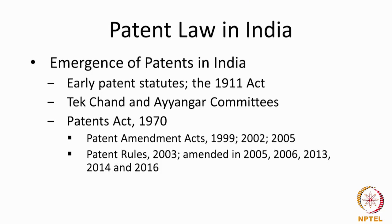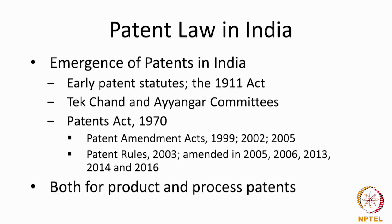Soon after amending the Act, the rules were also amended. The rules are subsidiary to the Act — they are what we call delegated legislation. The central government has the power to make the rules, whereas Acts have to be passed in both houses of Parliament. There was a substantial overhaul in 2003 where new rules were framed, and these rules were further amended in 2005, 2006, 2013, 2014, and 2016. With the amendment of the Patents Act in 2005, India now offers both product and process patents irrespective of the technology. Earlier there was a distinction that product patents need not be granted for drugs and pharmaceuticals — that distinction is now gone. The two kinds of patents broadly grantable under the Indian Patents Act are either for a product or for a process.